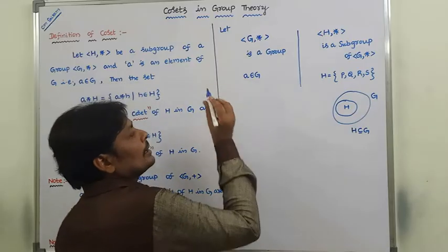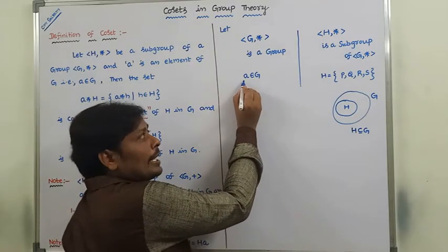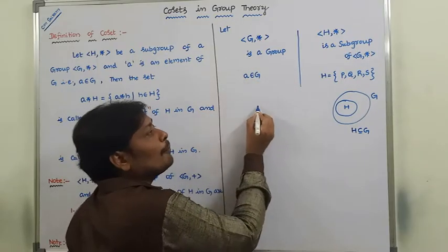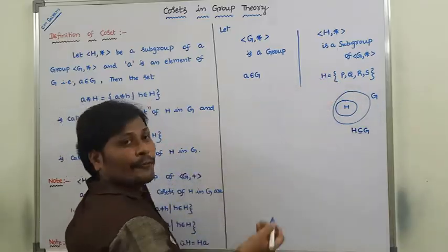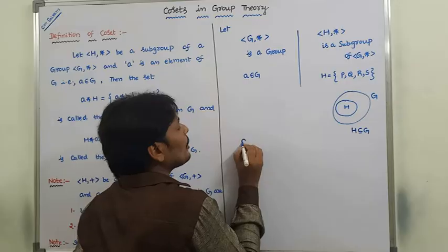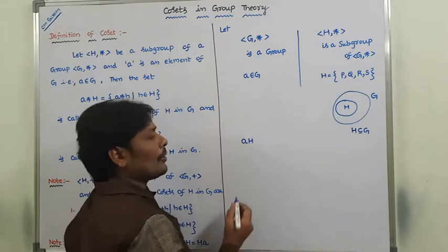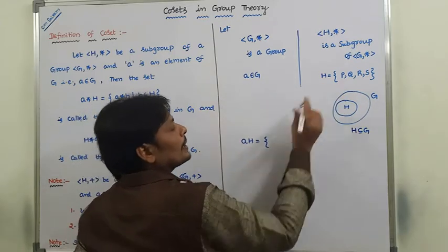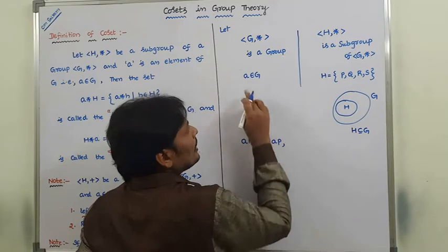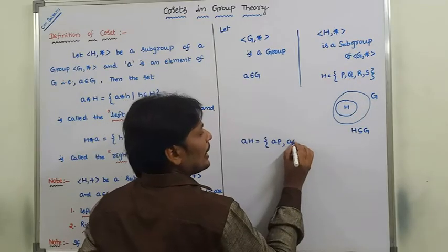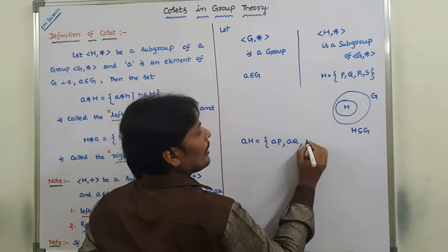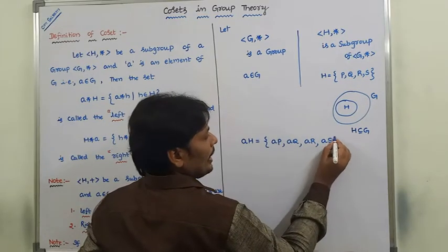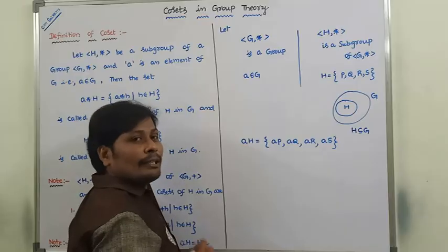Small a is an element of G. This small a is combined with all the elements of H, then we can form a coset A·H. So A·H equals {a*p, a*q, a*r, a*s}, where a is combined with p giving ap, a combined with q giving aq, a combined with r giving ar, and a combined with s giving as.